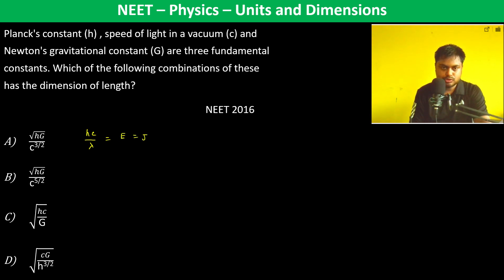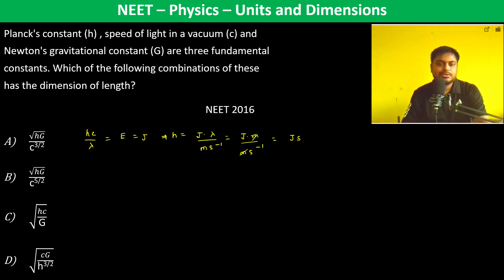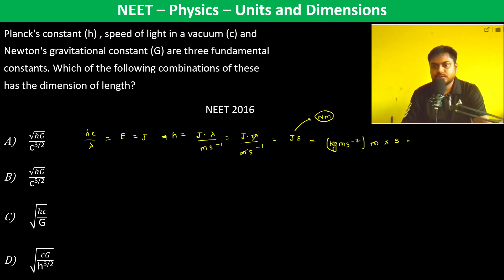Therefore h is equal to joule times lambda divided by meter per second, which gives joule meter by meter per second, so this is joule second. This is h, and this comes out to be Newton meter second, so kg·m·s⁻². This joule can be written as Newton meter, therefore kg·m·s⁻² into meter into second, giving kg·m²·s⁻¹.